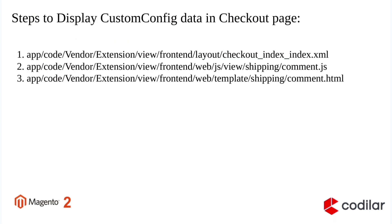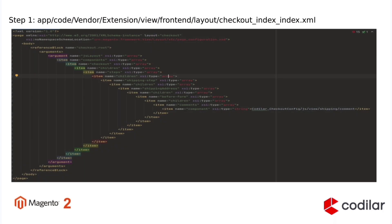Now we will check the steps to display custom config data in our checkout page. We will use an HTML file to display the data. First we need to create a checkout_index_index.xml file under app/code/vendor/extension/view/frontend/layout. Then we will create a component.js file under app/code/vendor/extension/view/frontend/web/js/view/shipping directory.